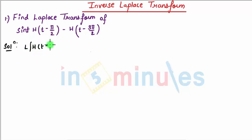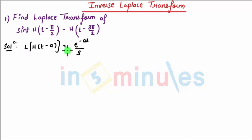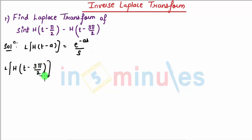We know the Laplace of h(t - a) is e^(-as) / s. Using this formula, we can find the Laplace of h(t - 3π/2), which is e raised to -(3π/2)s.